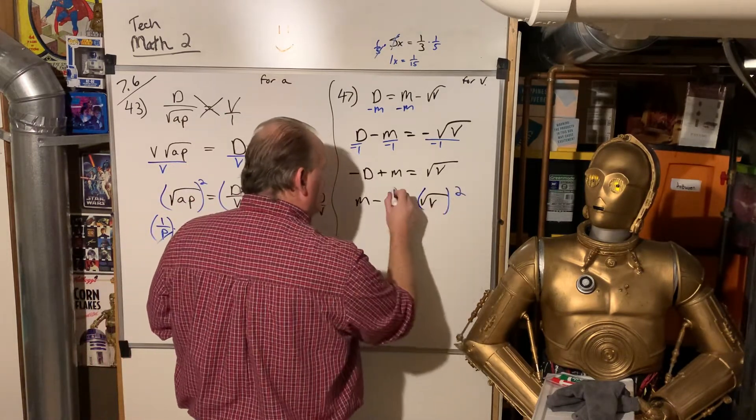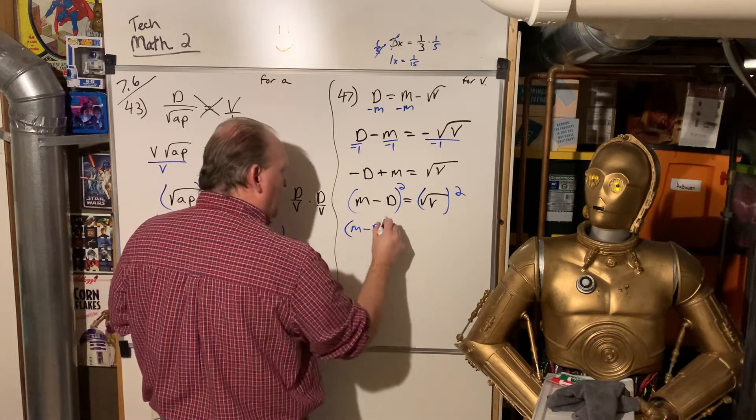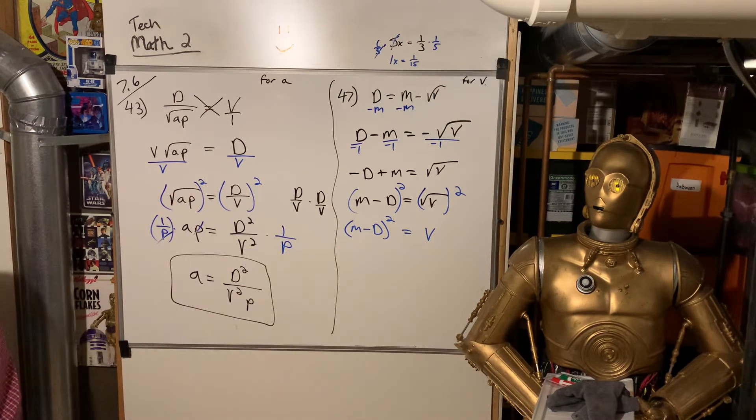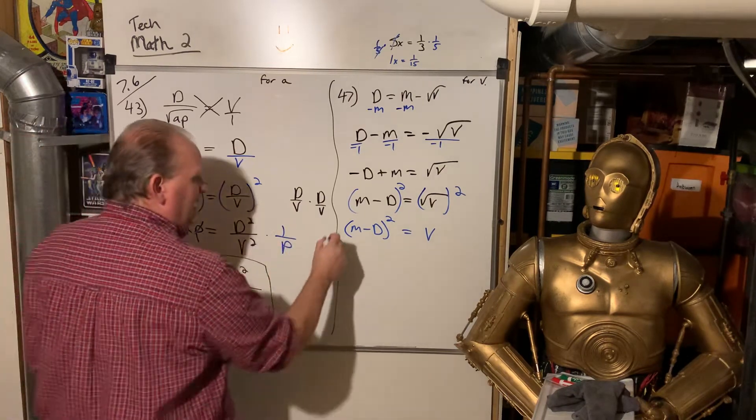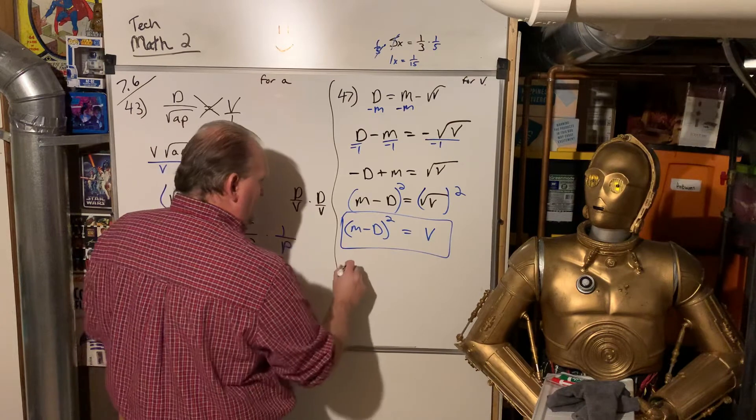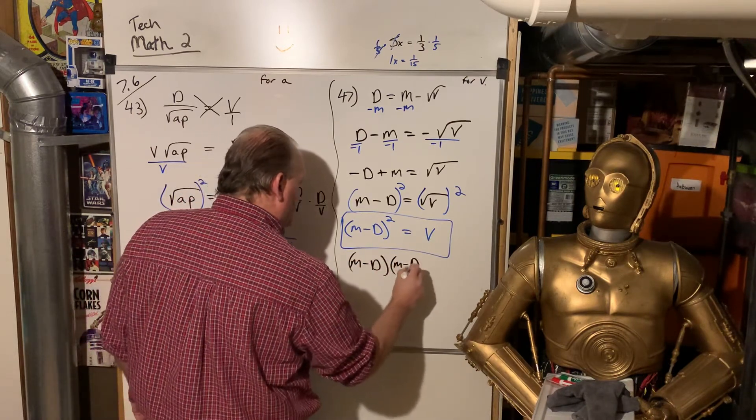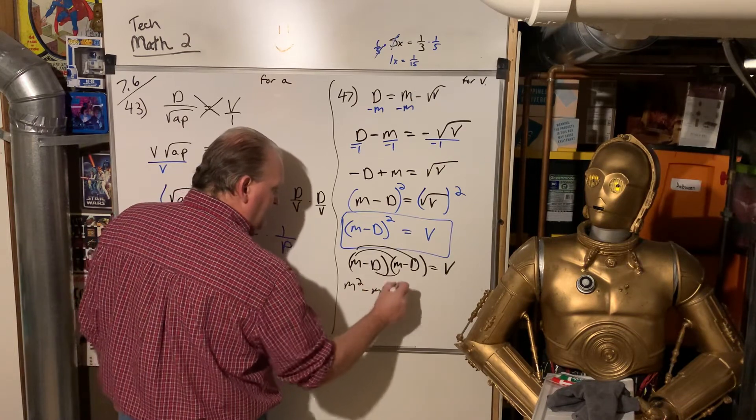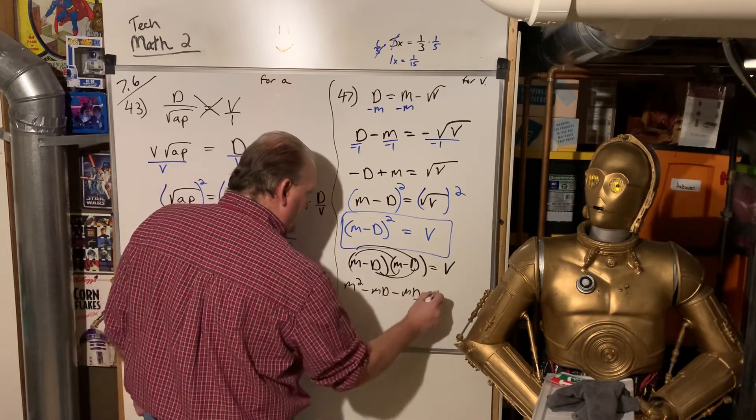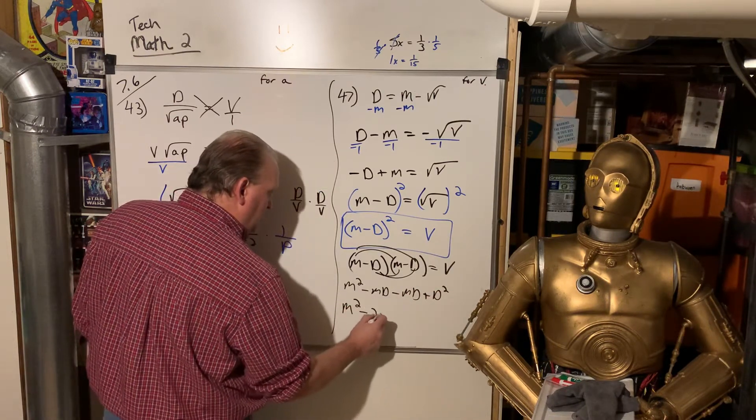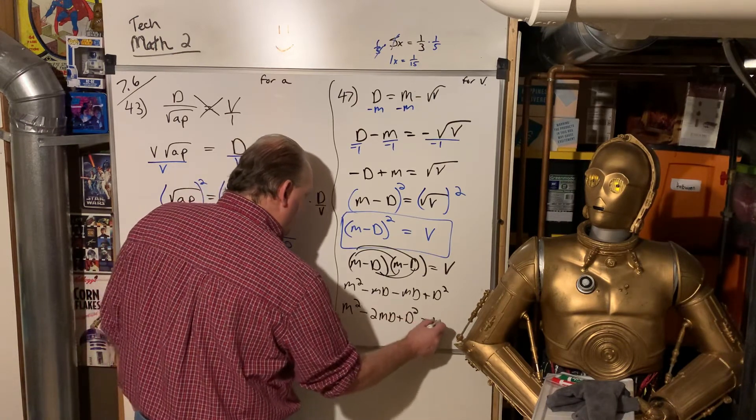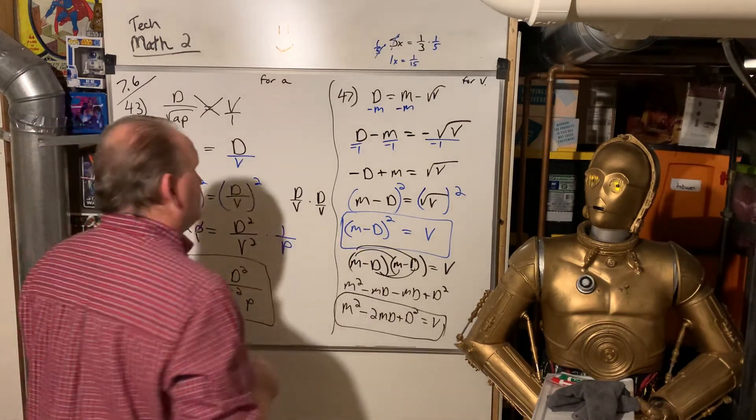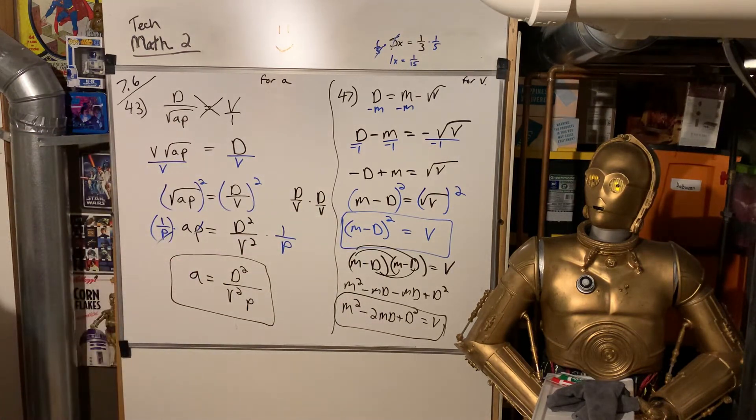Square both sides. And that's tricky on this one. Because now you have M minus D quantity squared equals V. We could put that down as our answer. That is all they did for their answer. You could have also done this if you wanted to flex your algebra muscles. That would be M squared minus MD minus MD plus D squared. And then we'd have M squared minus 2MD plus D squared is equal to V. So that would just be a multiplied out version. But in your book, they just left it like that.